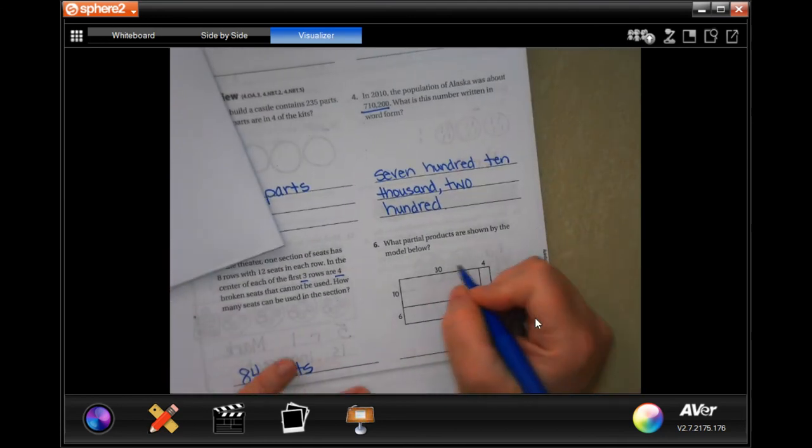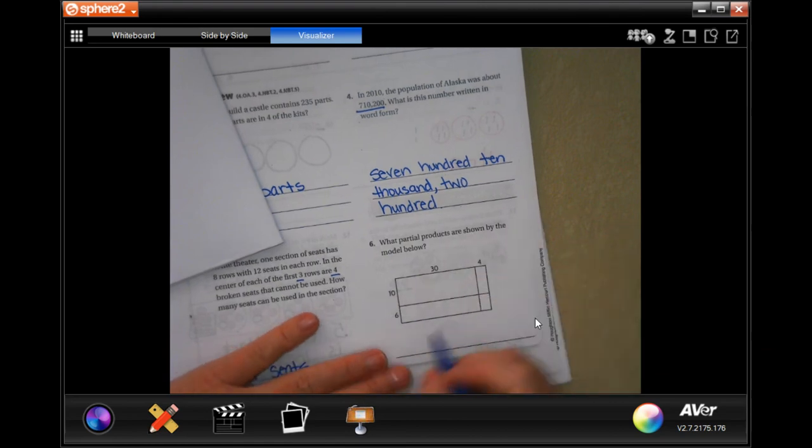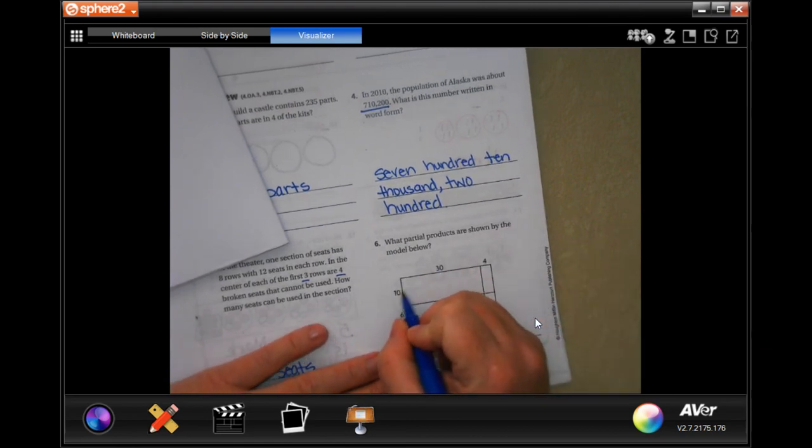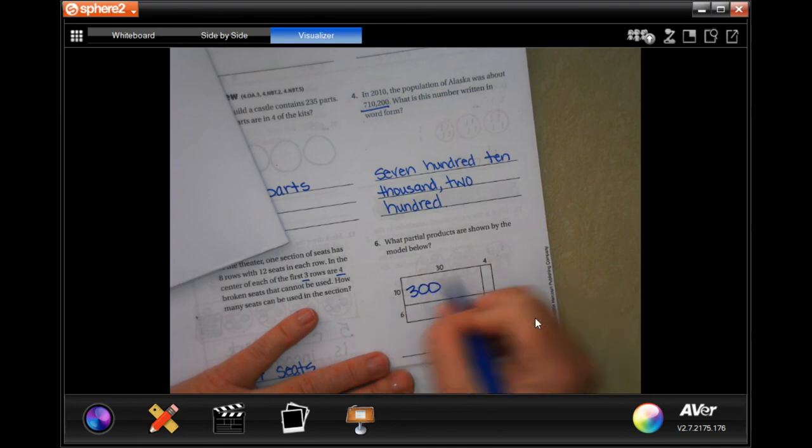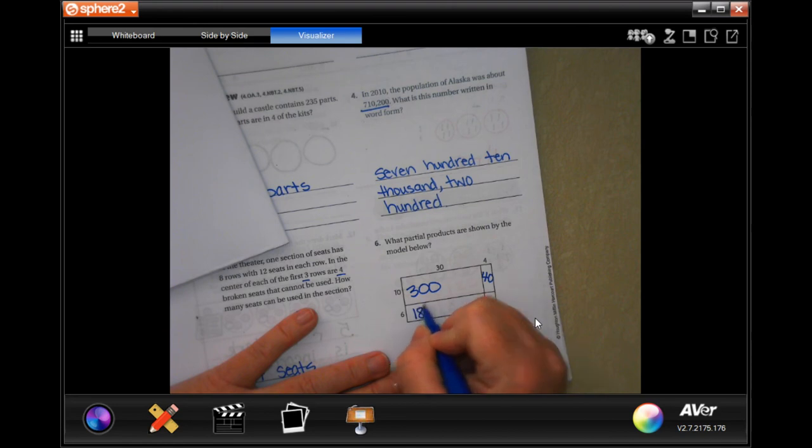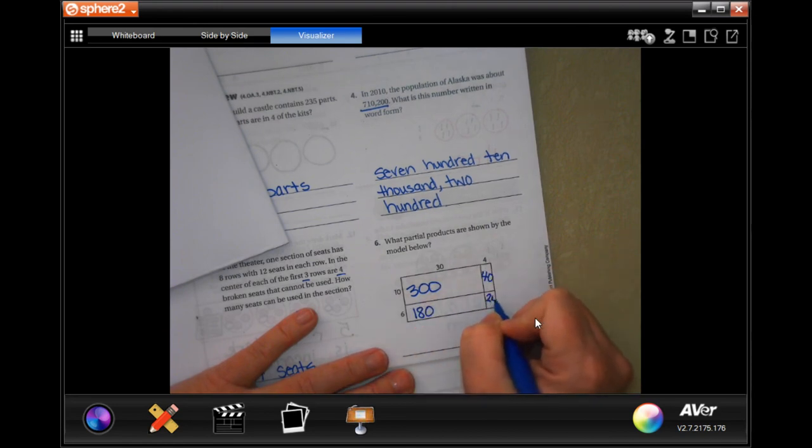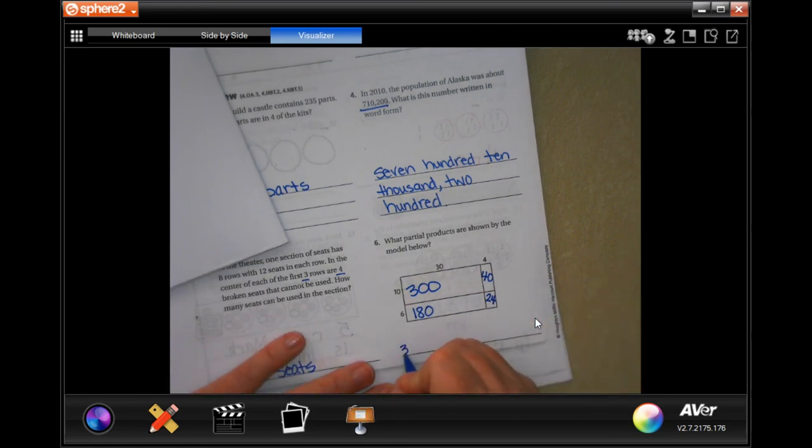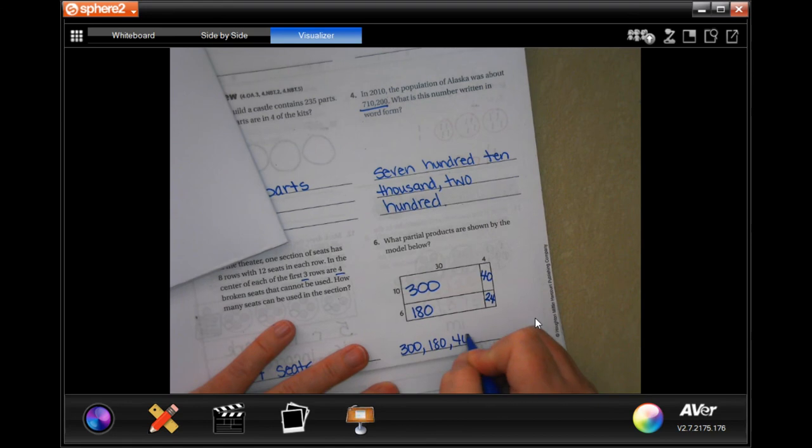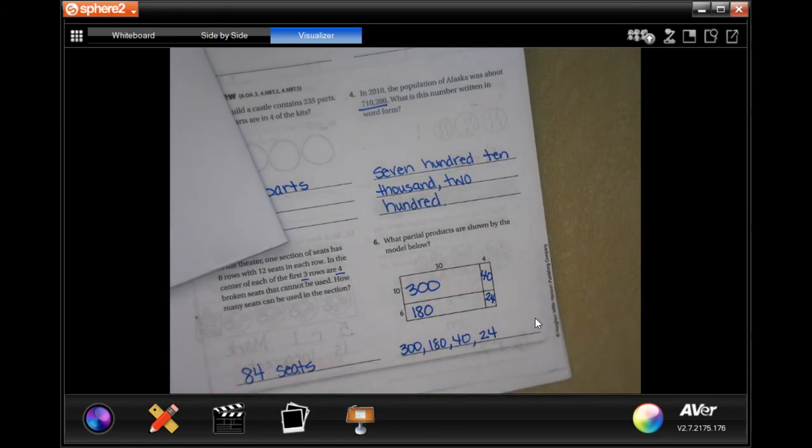All right. What are the partial products shown by the model below? Well, 10 times 30 is 1 times 3 is 3 and then I have one, two zeros. 10 times 4 is 40. 6 times 3 is 18 and then add that 0, and 6 times 4 is 24. So 300, 180, 40, and 24. It doesn't want to know the answer, just wants to know the partial products.